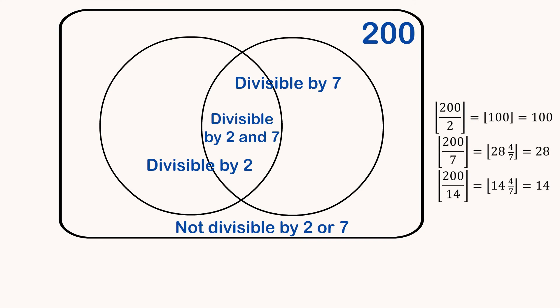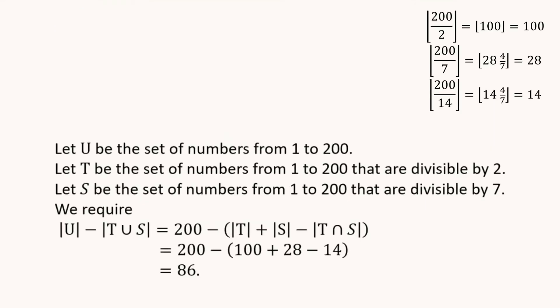So now, having got that, we're now in a position to write out this solution. So we'll let U be the set of numbers from 1 to 200. That's the universal set. Let T be the set of numbers from 1 to 200 that are divisible by 2. And S is the set of numbers from 1 to 200 that are divisible by 7.